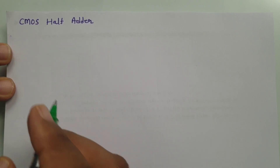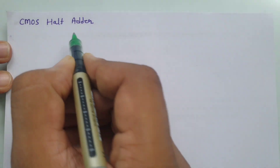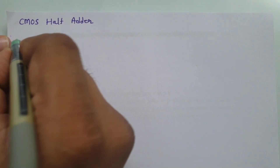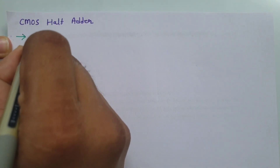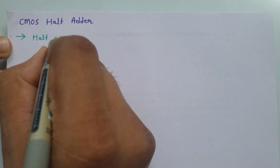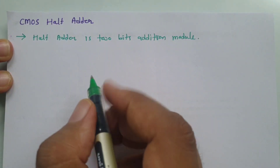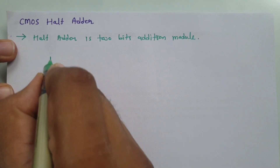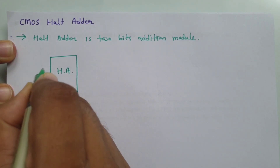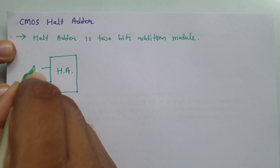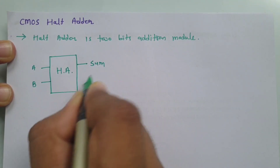Welcome to VLSI lecture series. Professor Dulakia is going to explain CMOS half adder. First of all, we should know what is a half adder. A half adder is a two-bit addition device, so by using a half adder we add two bits. If you have a half adder, there will be two inputs A and B, and the outputs will be Sum and Carry.